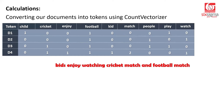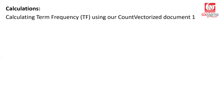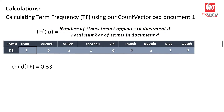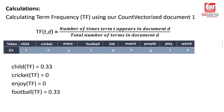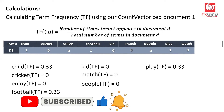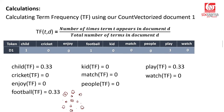Now let's calculate term frequency on this count vectorized output. For D1, 'children play football,' the word 'child' appears once out of three total words, so TF = 1/3 = 0.33. Cricket and enjoy are zero. Football and play are also 0.33. For D2, 'people watch football,' football, people, and watch are each 0.33 — one word out of three total. All unused words are zero.